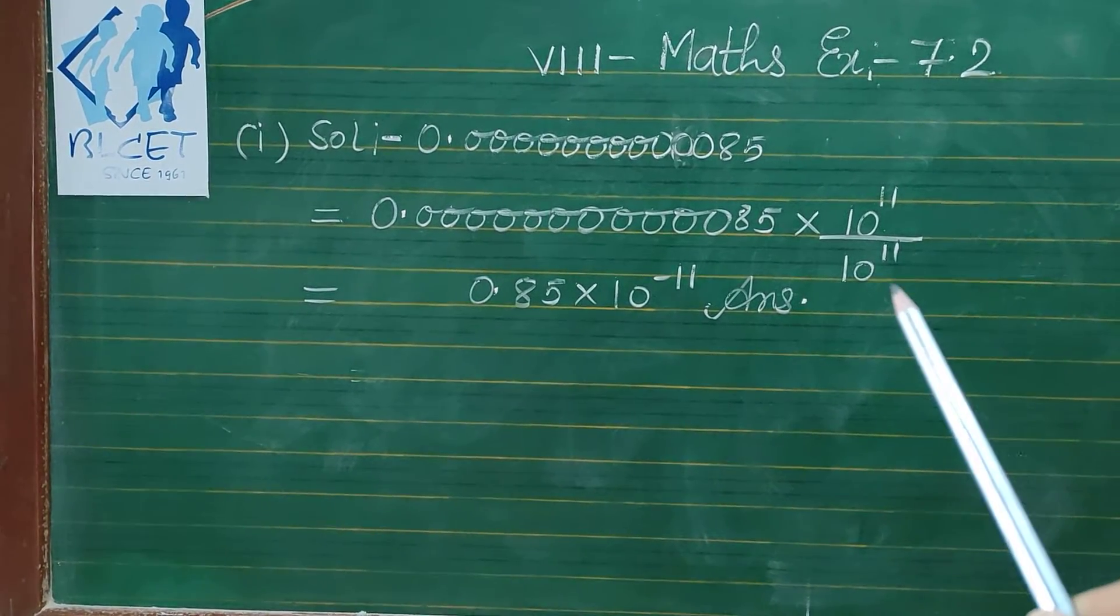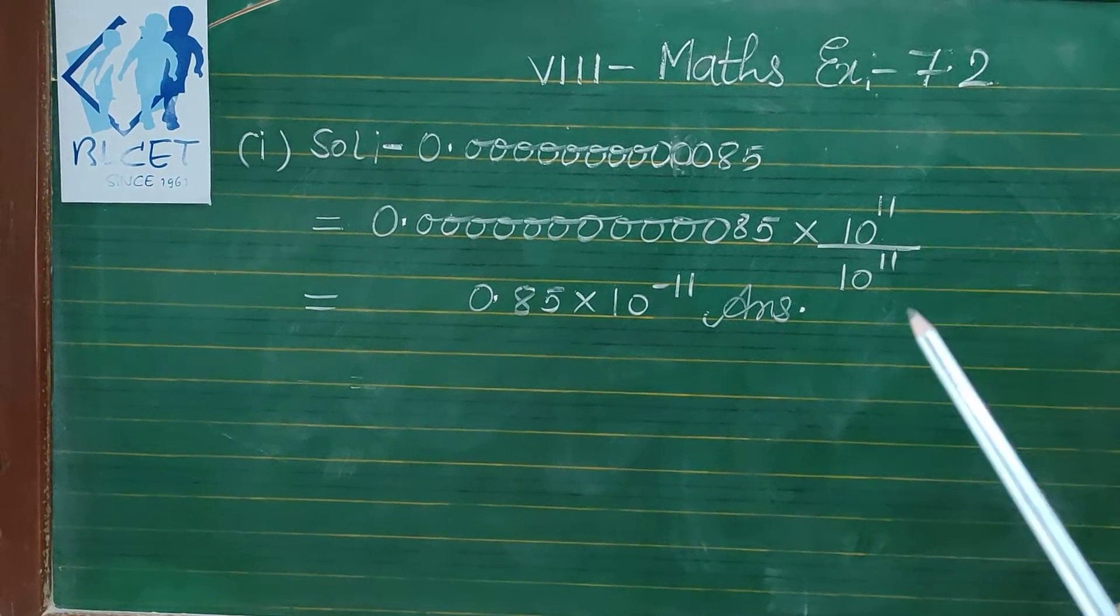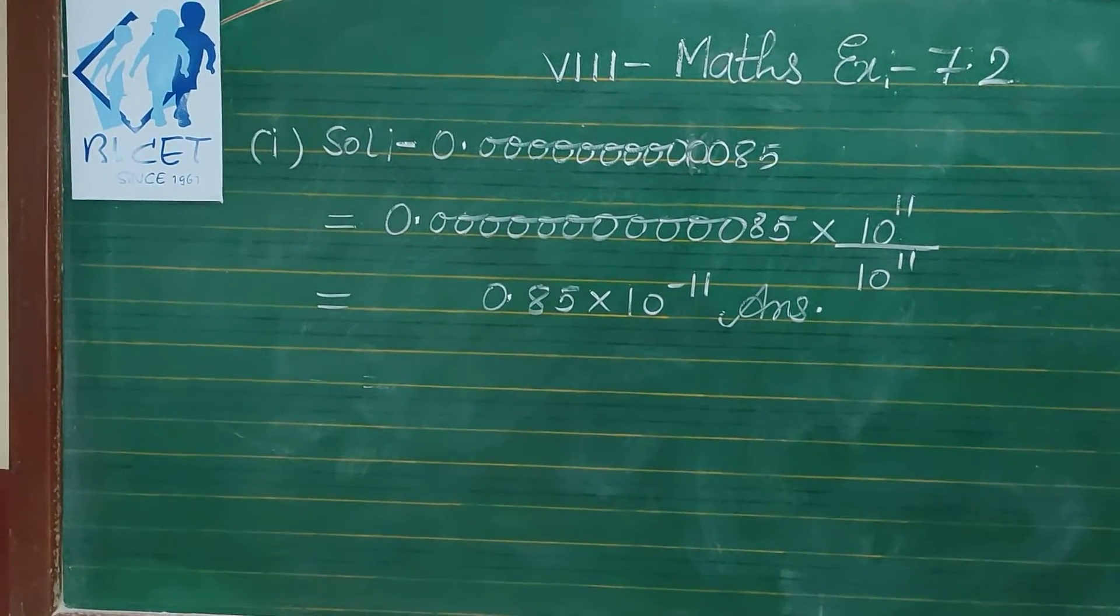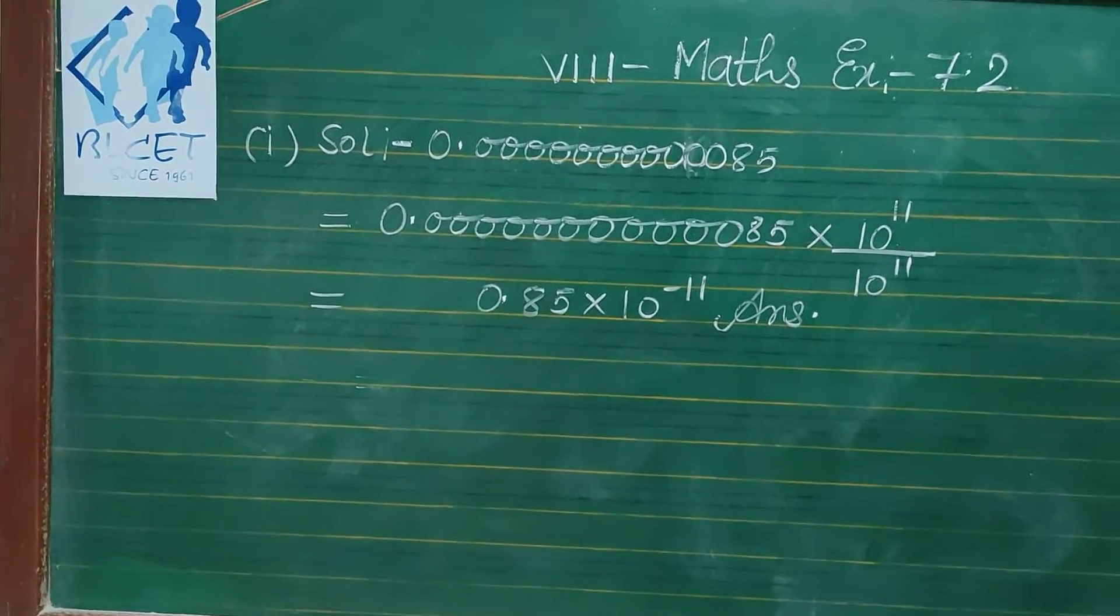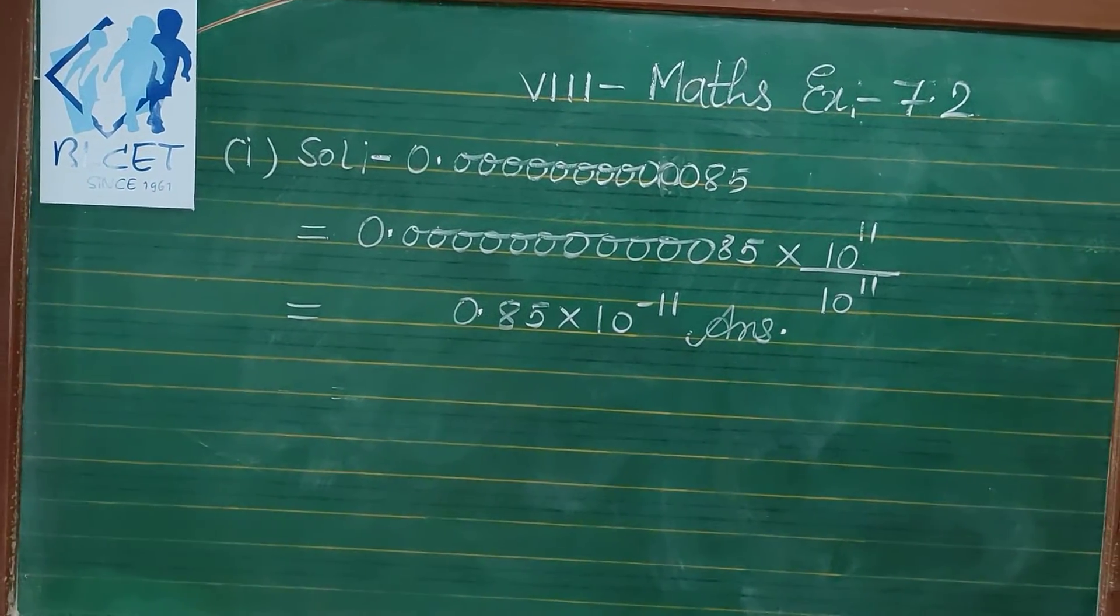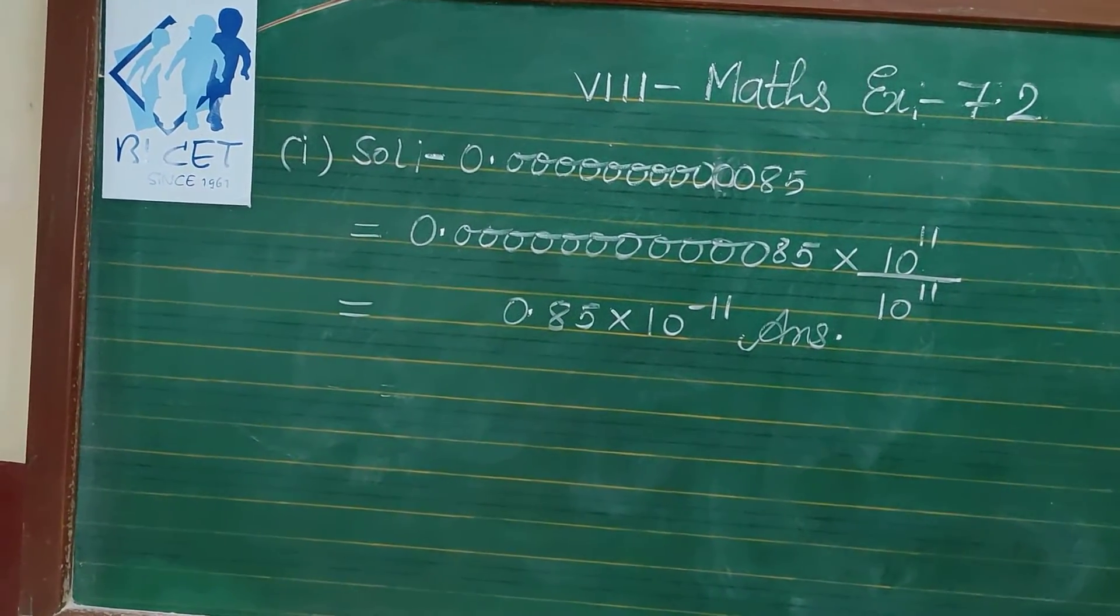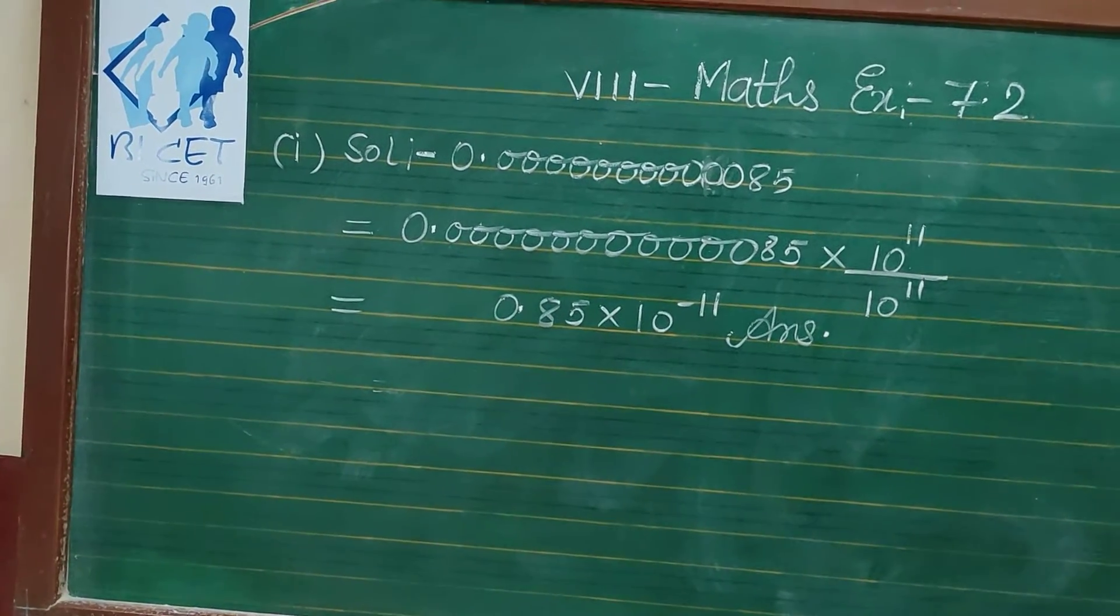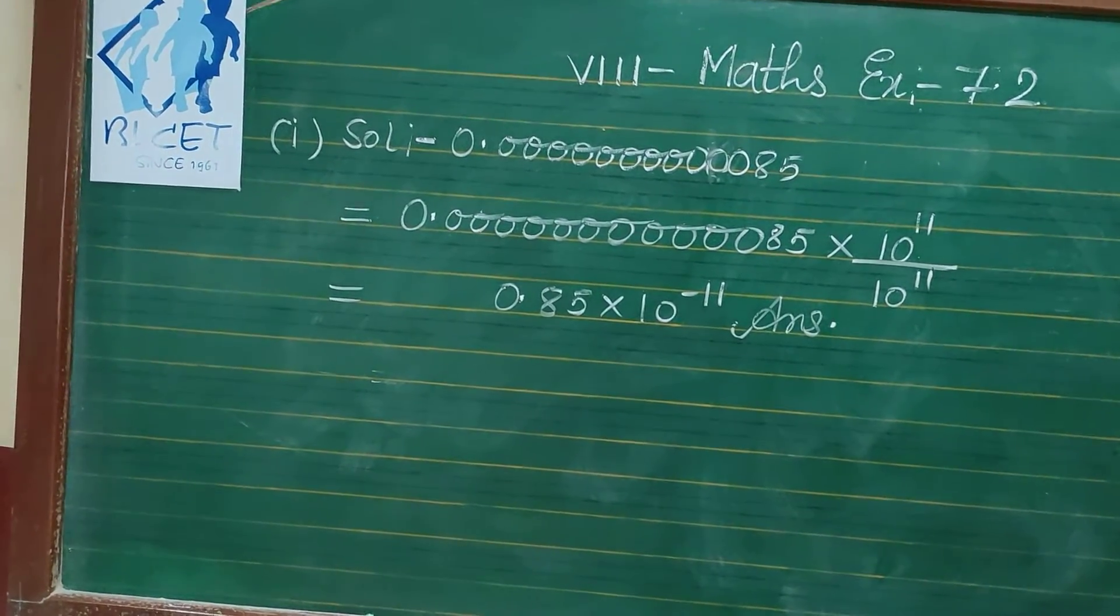You can see here it is in the denominator form, and by the formula x to the power m is equal to 1 upon x to the power minus m, or 1 upon x to the power m is equal to x to the power minus m.